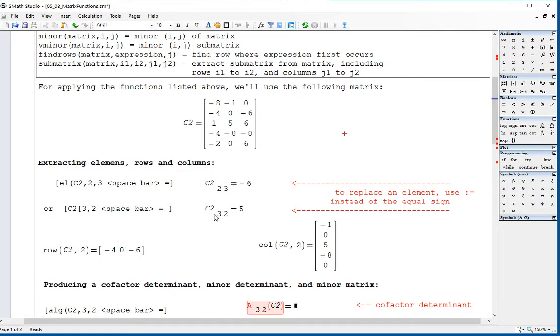There's another example right here. To extract a row, for example, here's extracting the second row from C2, we're going to get this vector, this vector in the second row. Column, the second column will be this column.